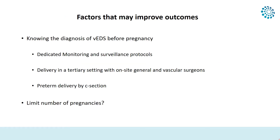There are factors that may improve outcomes during pregnancy. The most important is knowing the diagnosis of vascular EDS before becoming pregnant, so that dedicated monitoring and surveillance protocols may be implemented. Delivery may be scheduled in a tertiary setting with high security in case of any adverse events, notably arterial accidents. Some patients may benefit from preterm delivery by C-section to prevent massive hormonal changes during delivery and mechanical fatigue of arteries, especially in patients with dominant negative mutations.